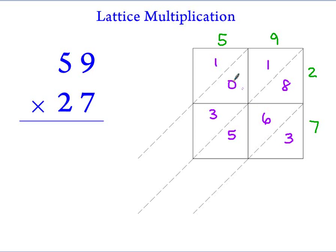Finally, we will start in the bottom right corner. We will add the numbers inside the lattice along each diagonal. We will write these sums along the bottom and left lattice. If the sum on a diagonal exceeds 9, we will simply carry the tens digit to the next diagonal to the left.